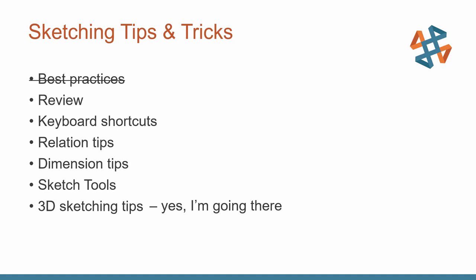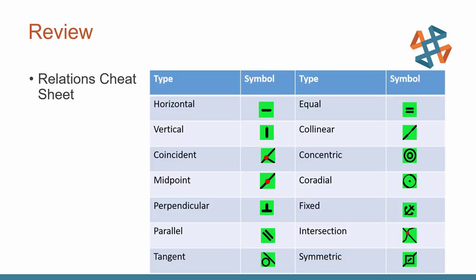Moving on, let's get into a review of the mechanics of using sketches, starting with what I like to call the relations cheat sheet. These are icons I created that show all of your sketch relations and their on-screen display. I find it useful — I used to have this printed and put up on the wall of my office. It helps us understand the difference between coincident, midpoint, and intersection, as they can all look fairly similar on a small monitor.